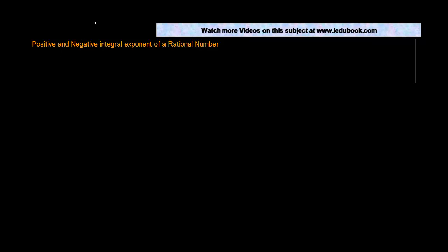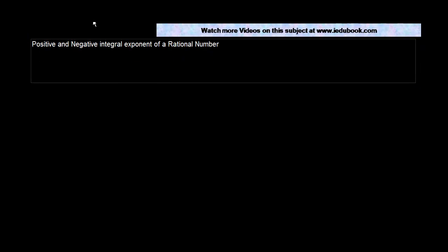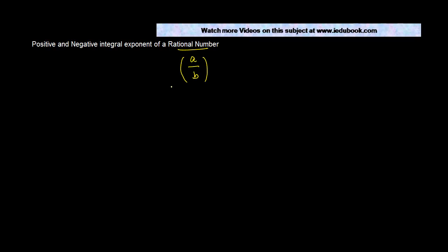Positive and negative integral exponents of a rational number. A rational number is a number of the form a upon b. We are looking at raising this rational number to the power n, where n can be a positive or negative integer. We will see how the properties of rational numbers behave when treated with a positive or negative integral exponent.